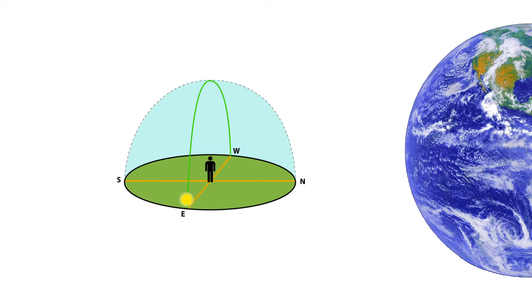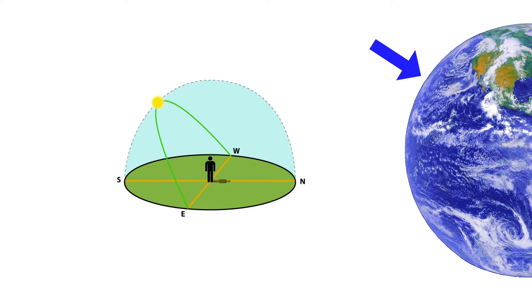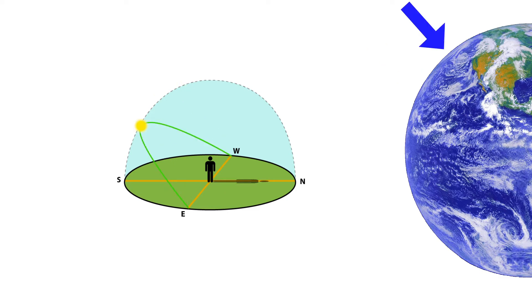This green line from earlier only represents the Sun's path through the sky at the equator. As your latitude changes, the line moves away from being vertical and angles down toward the horizon. Your latitude affects the Sun's path through the sky and also affects how far your shadow will stretch away from you.